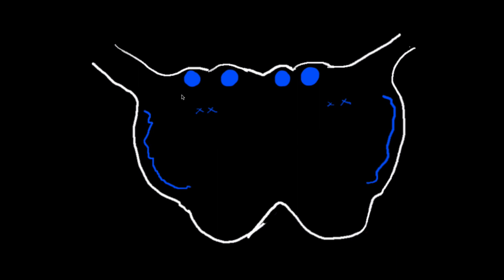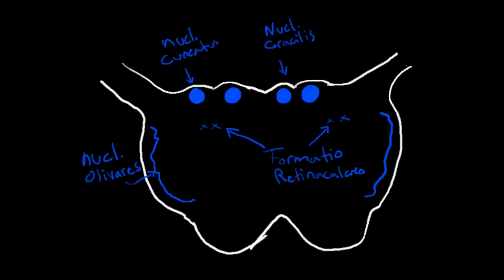Now let's start with the gray matter, which contains only nuclei. Blue color represents ascending tracts — signals going from the body or spinal cord upwards to the brain. The first nucleus is the nucleus gracilis, located in the tuberculum gracilis; it is responsible for deep sensation of muscles in the lower trunk and lower limbs. Then you have the nucleus cuneatus, located in the tuberculum cuneatus; it is also responsible for deep sensation of muscles in the upper trunk and upper limbs. Then at the level of the nucleus olivares, two important tracts start: the tractus olivospinalis and tractus olivocerebellaris. The nucleus olivares is responsible for keeping your balance.